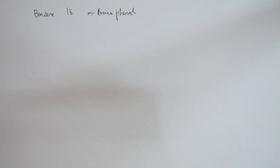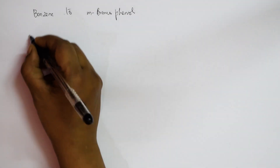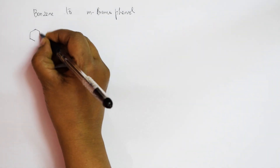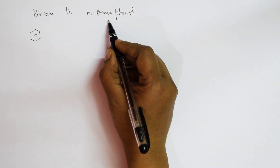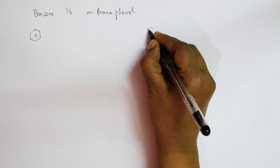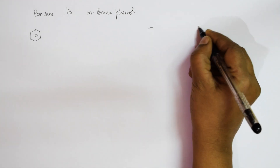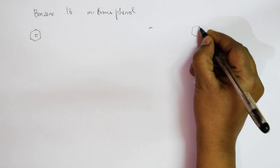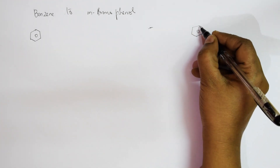Let's come back and see the next type of conditions. Now they've asked me to convert benzene to meta-bromophenol. Let me write the formula first — I have benzene, and I need to convert it into meta-bromophenol.